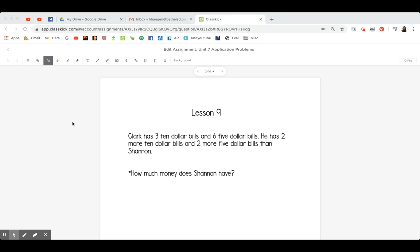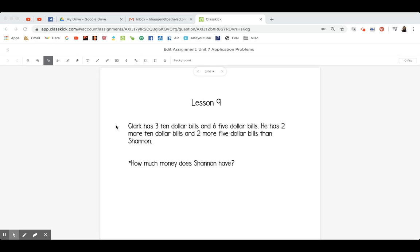Today you can see we have a lot of dollar bills in this story problem that we're going to be adding. So let's go ahead and get started. Clark has three $10 bills and six $5 bills. He has two more $10 bills and two more $5 bills than Shannon.